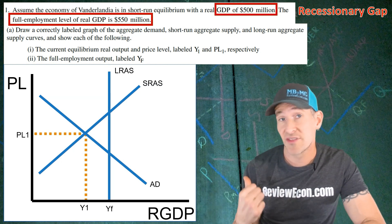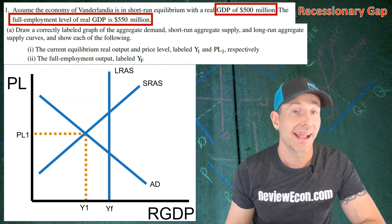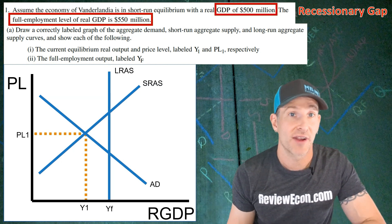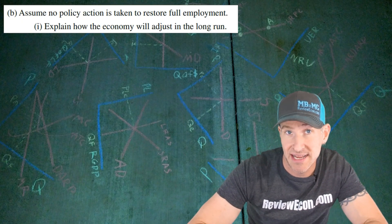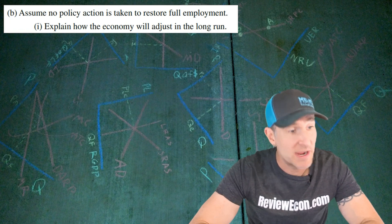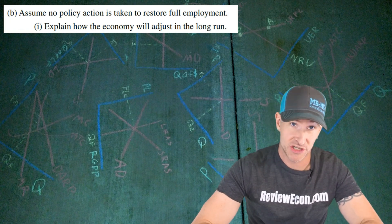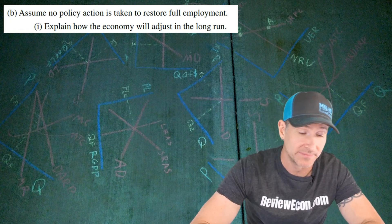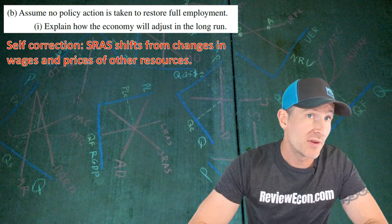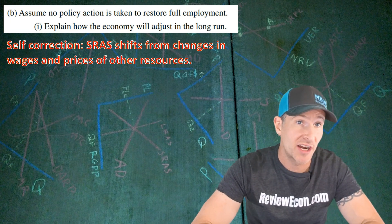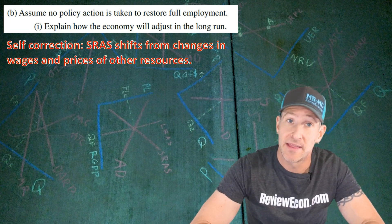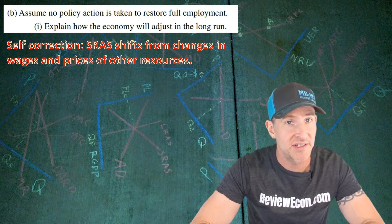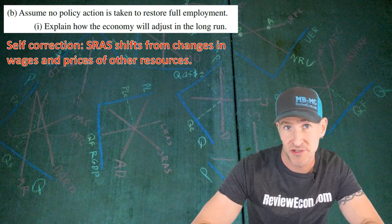You're going to get two points for that graph. For part B, we have to assume there is no government action taken to restore full employment and explain how the economy will adjust in the long run. To answer this, we have to remember that the self-correction of the economy comes from a shift of the short-run aggregate supply curve, and that shift happens when there are changes in wages or other resource prices.